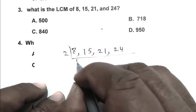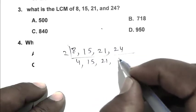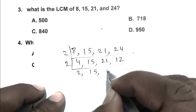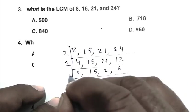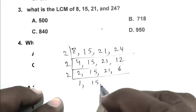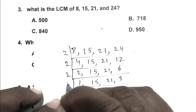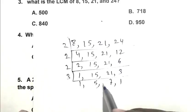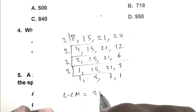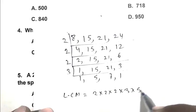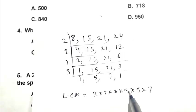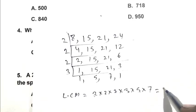Divide by 2 again: it becomes 2, 15, 21, 6. Divide by 2 again: it becomes 1, 15, 21, 3. Divide by 3: it becomes 1, 5, 7, 1. So friend, LCM is 2 multiplied by 2 multiplied by 2 multiplied by 3 multiplied by 5 multiplied by 7. So it becomes 8, 8 times 3 is 24, 24 times 5 is 120, 120 multiplied by 7 is 840. So friend, C is the right answer.